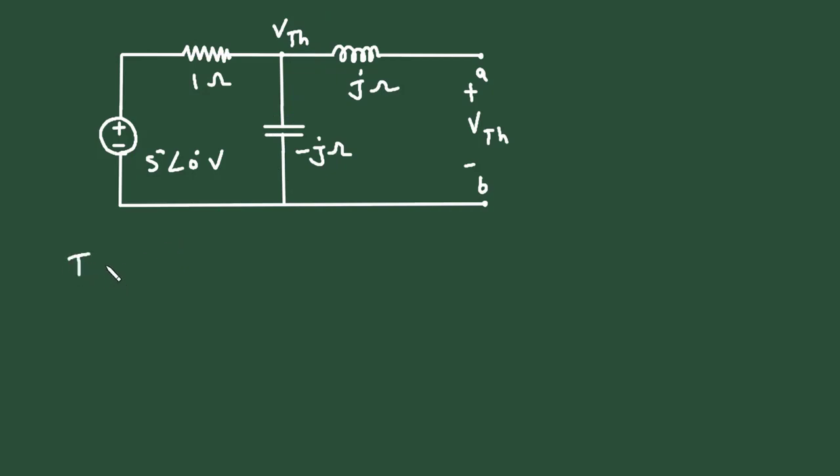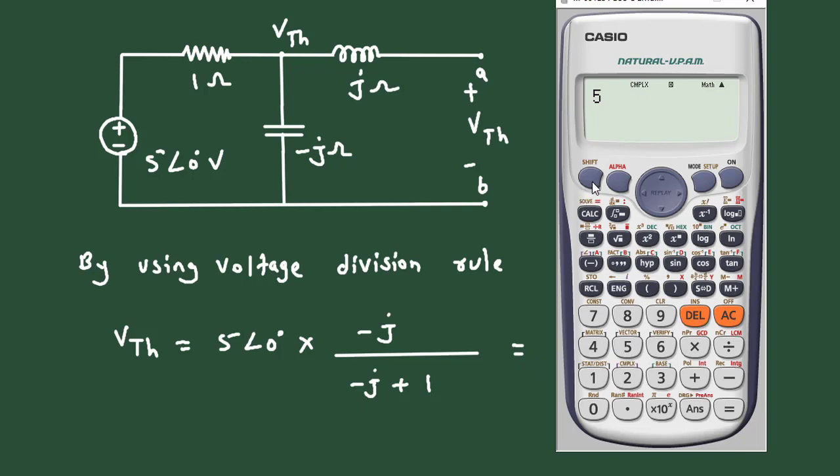So by using voltage division rule, this Vth is equal to this voltage 5, or 5 at an angle 0 degree, multiplied with minus j divided by minus j plus 1. If we simplify this in calculator, 5 at an angle 0 degree multiplied with minus j divided by minus j plus 1.